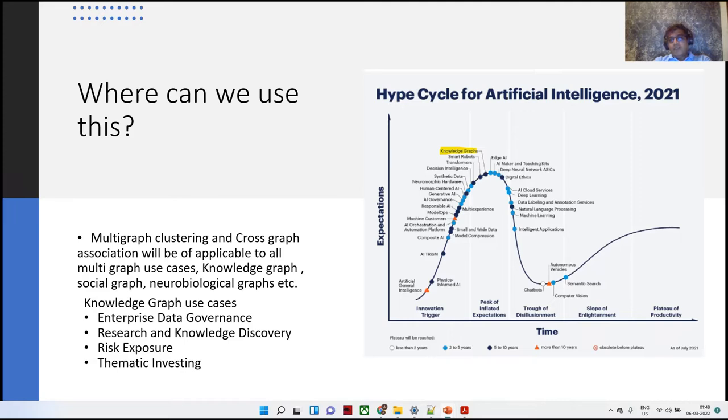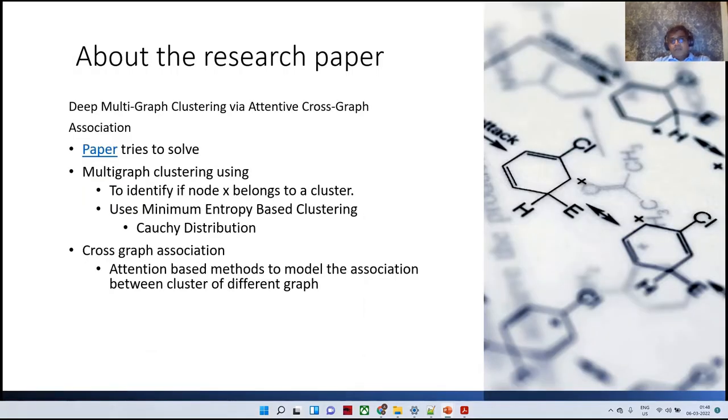If you've been following the Gartner cycle in the last five years, you've seen knowledge graph move rapidly from innovation trigger to peak inflated expectation. Some knowledge graph use cases we're seeing include enterprise data governance, research and knowledge discovery, risk exposure and thematic investing. About this research paper, Deep Multigraph Clustering by Attentive Crossgraph Association, the paper tries to solve multigraph clustering using minimum entropy-based clustering, especially Cauchy distribution to identify if a node X belongs to a cluster.